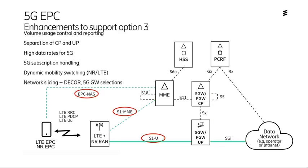The enhancements we see for NR support in non-standalone are: the separation of the Control Plane and the User Plane; the higher data rates that can be supported with 5G because of a move into the higher frequency bands for NR, where we may have 100 MHz or even as much as 400 MHz of bandwidth in the millimeter wave; the ability to handle EN-DC 5G subscriptions through the HSS; mobility switching, which is still a primary function of the master 4G node even when moving from one 5G cell to another; and also some — although initially very limited — support for network slicing.